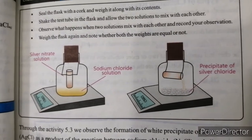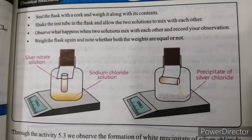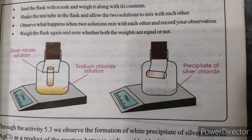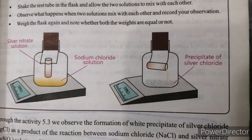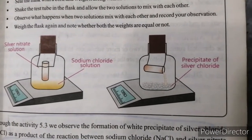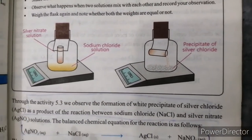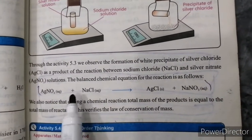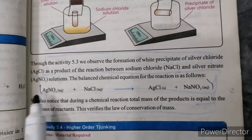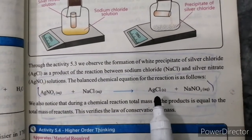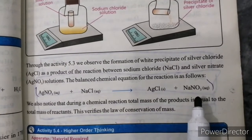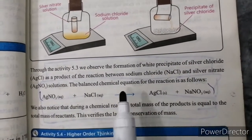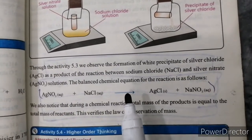When you see the result, you will know that silver chloride and sodium nitrate are being made. These two products have the same total mass as the reactants. The mass of the reactants — silver nitrate and sodium chloride — equals the mass of the products — silver chloride and sodium nitrate. The total mass does not change.